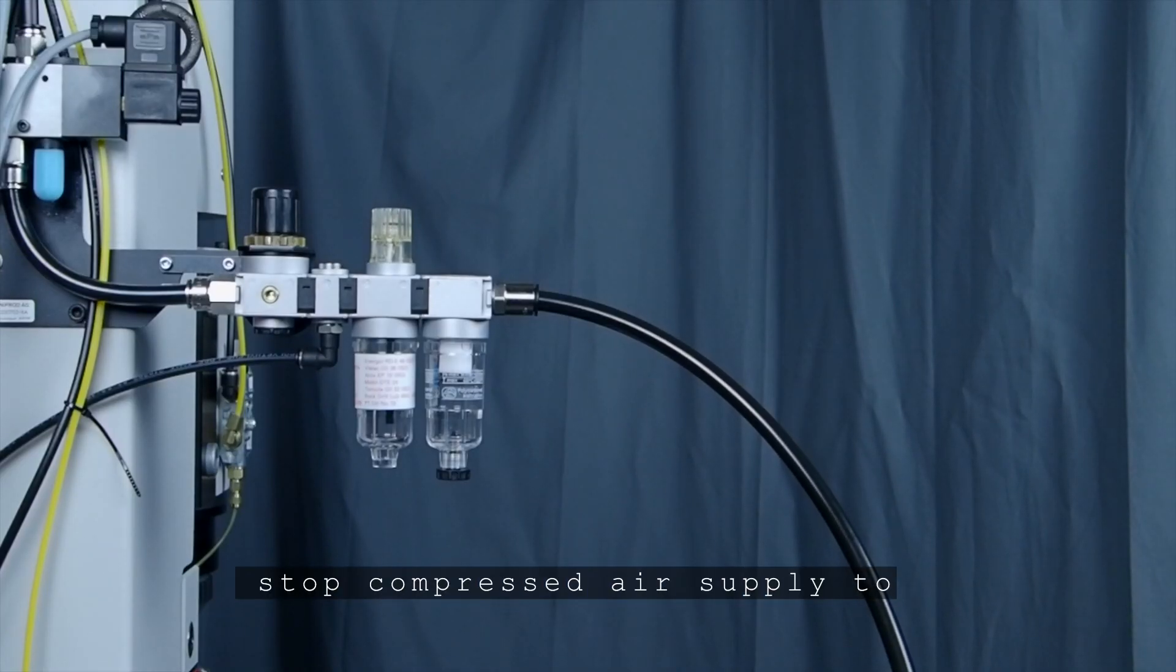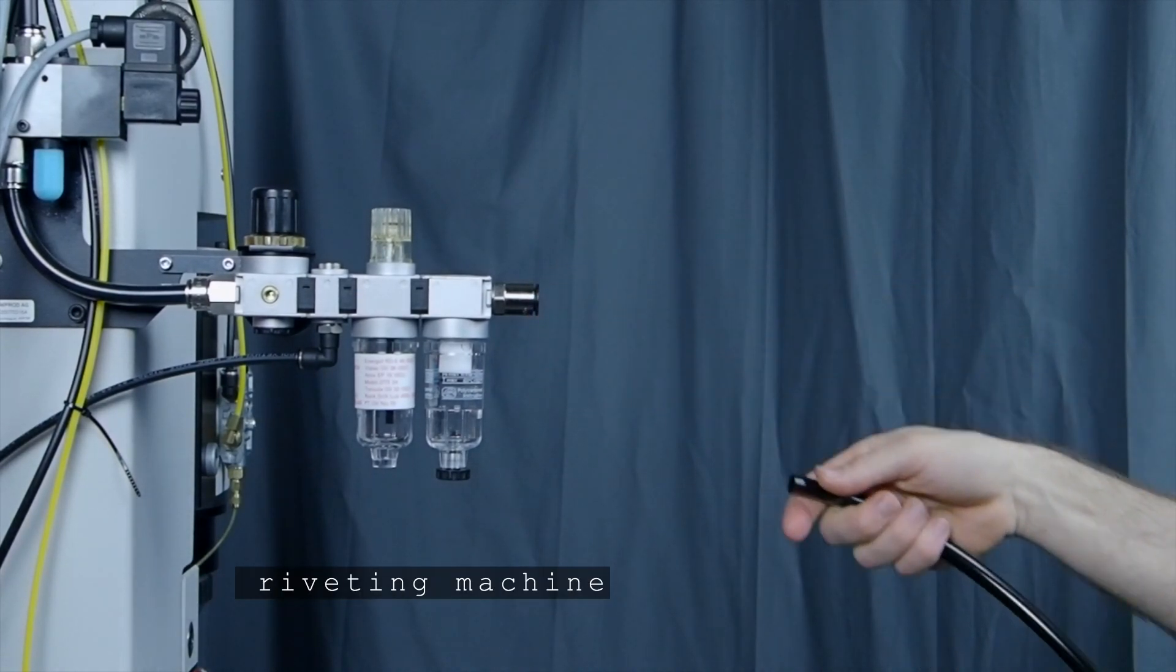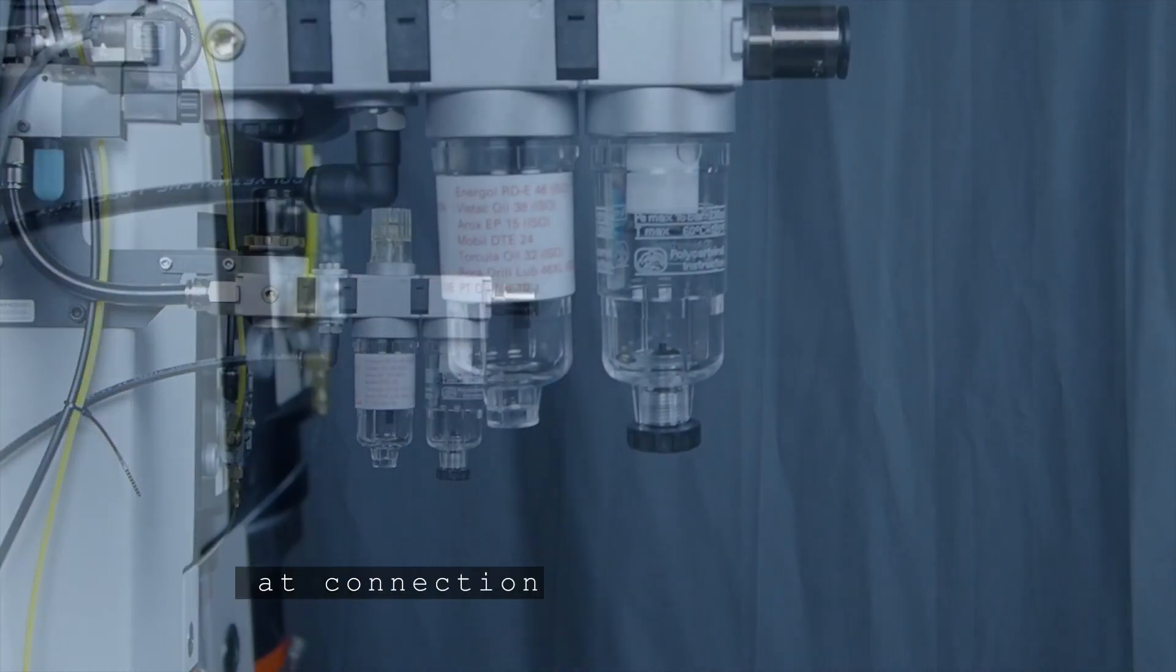First stop the compressed air supply to the riveting machine and disconnect the air hoses from the machine.